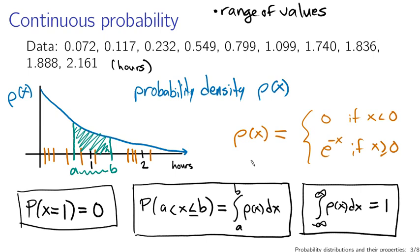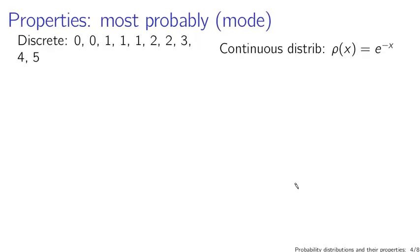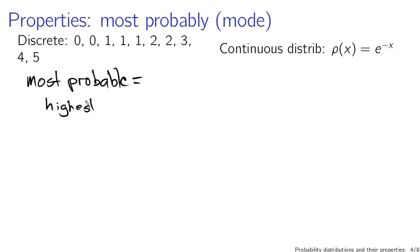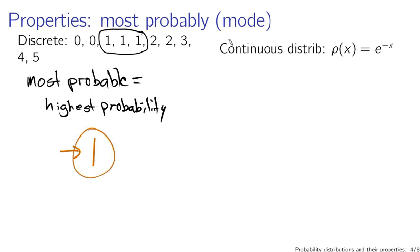So that's continuous probability. If you have a continuous range of outcomes, you have to deal with probability density functions and you have to do some integrals to calculate properties. The most basic property is probably the most likely outcome. In the case of a discrete probability distribution, this is just the most probable — the outcome with the highest probability, which means the outcome that occurs the most times. In this case, that's 1.